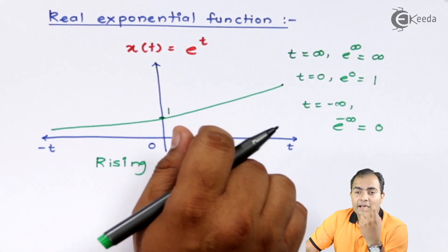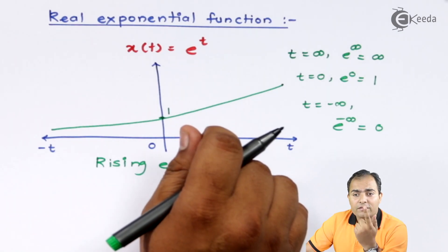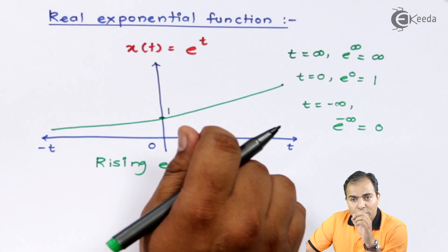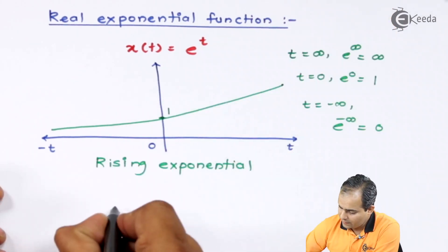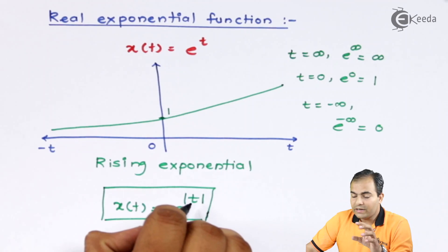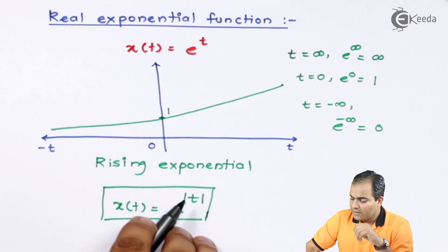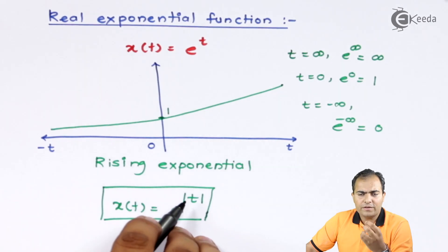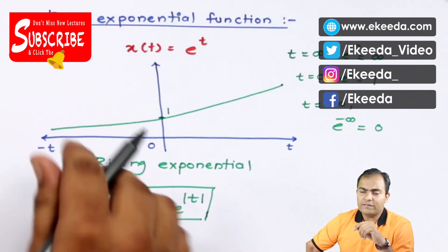In both cases, the base is e. In the first case we placed e to the power minus t and in the next case e to the power plus t. You can write the real exponential function using either sign. You can take the t value negative or positive because the modulus will absorb the sign. If the t value is negative the graph will be decaying, and if the t value is positive the graph will be rising.